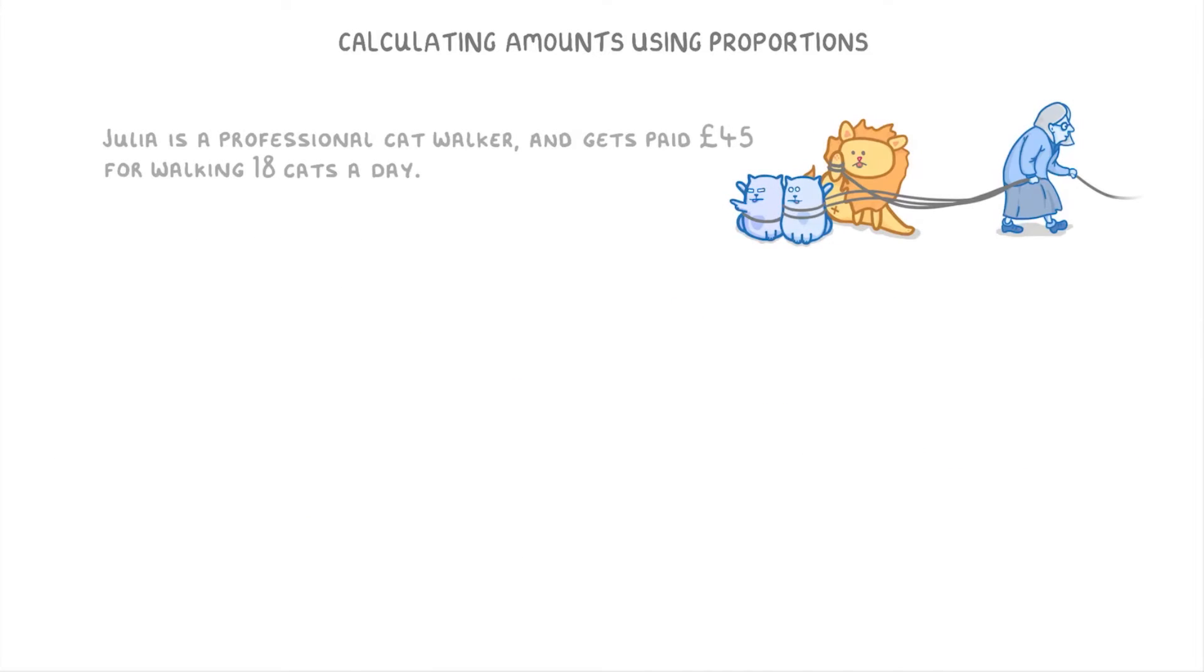Let's have a go at another one. Julia is a professional catwalker and gets paid £45 for walking 18 cats in a day. How much would she earn for walking 34 cats?